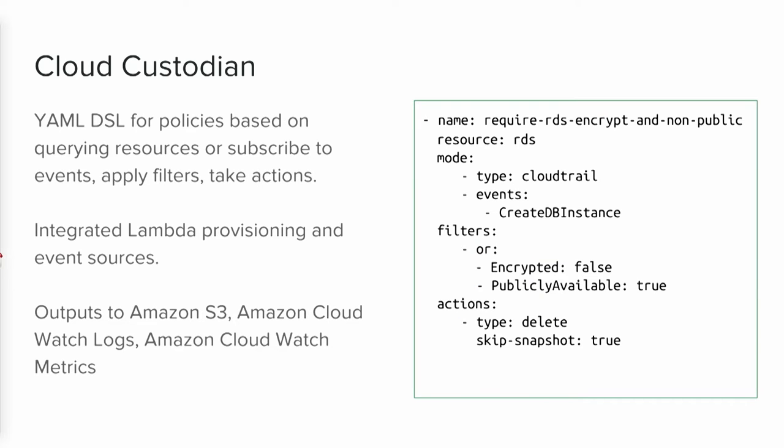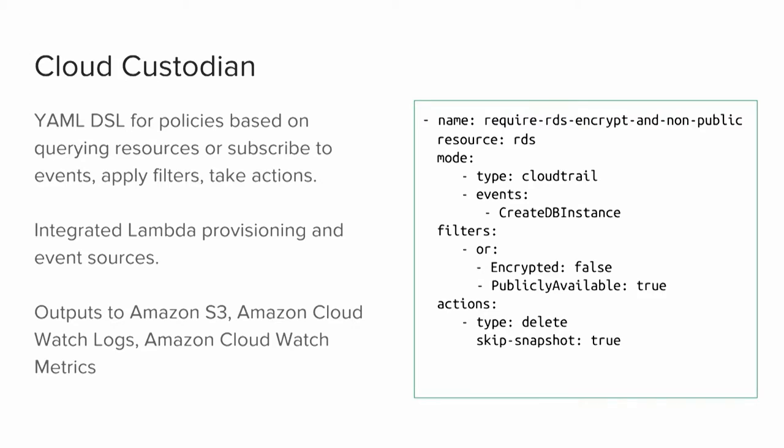So what does it look like? It's basically a bunch of YAML files. It also has an integrated serverless provisioning framework — it's not really meant to be general purpose, but when we wrote this last year there wasn't really anything to fit to purpose, so we built our own. It's embedded in the background for provisioning things in Lambdas. It is YAML DSLs, and we have consistent outputs across any type of policy into S3, into CloudWatch logs, and into CloudWatch metrics. You can also run things across accounts.